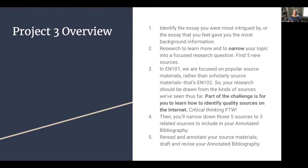Your research should be drawn from the kinds of sources we've seen already in class — the readings I've given you are really good examples of popular source materials. Part of the challenge for this project is learning how to identify quality sources on the internet. After you've researched, learned more, narrowed your topic, and developed a research question, you'll narrow your five sources down to the three best, most strongly related ones to include in your annotated bib — along with the article from class you've chosen. The last step is to reread, annotate, truly understand your source materials, and then draft and revise your annotated bibliography.